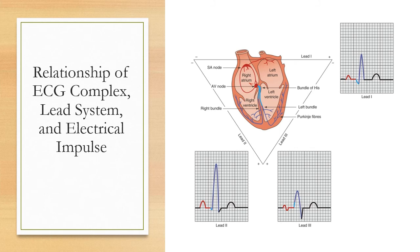When talking about the lead system for ECGs, the word 'lead' means a view or picture of the heart, and that doesn't always correspond to the number of electrodes attached to the patient. In a three-lead ECG, there are three electrodes and three viewpoints. However, a 12-lead ECG gives 12 views of the heart but uses only 10 electrodes attached to the patient.